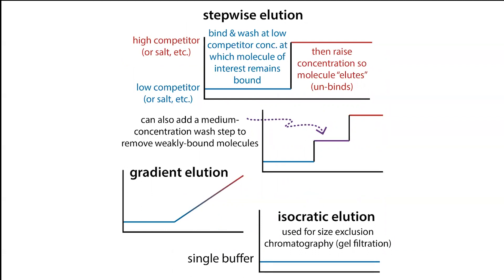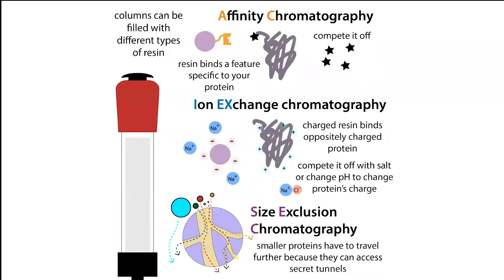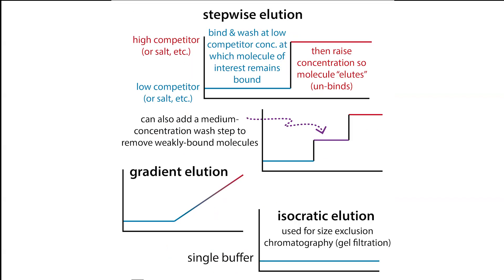Isocratic elution comes up with size exclusion chromatography, or gel filtration, where we separate proteins based on size. The proteins don't actually stick to the column — they flow through the resin, which has pores of various sizes. Larger proteins can access fewer pores; unable to enter the smaller pores, they take a shorter route around the beads rather than through them. So bigger things come off first in size exclusion chromatography, and smaller things come off later. We still call it elution even though we're not pushing them off.